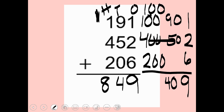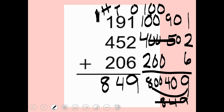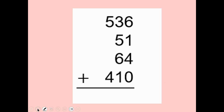In expanded form: one hundred plus one hundred is two hundred, plus four hundred is six hundred, plus two hundred is eight hundred. Converting to standard form gives eight hundred forty-nine — the same answer. Remember, pick the strategy that works for you and gets you to the correct answer.